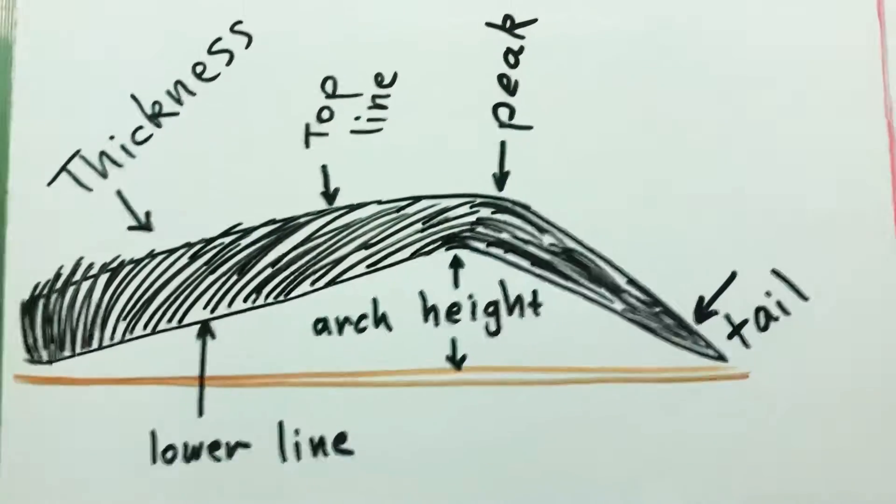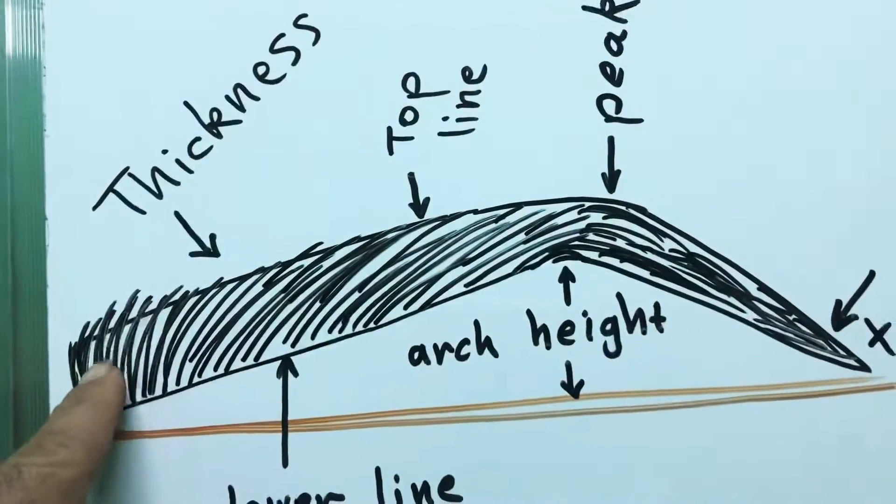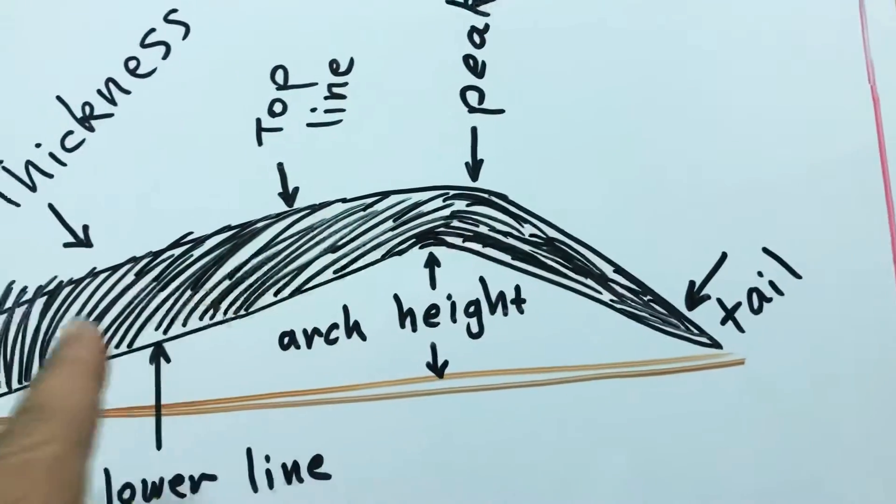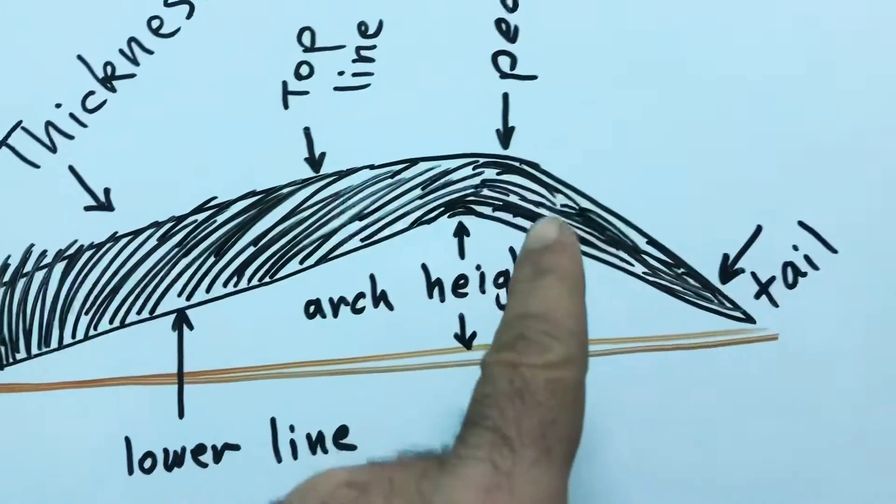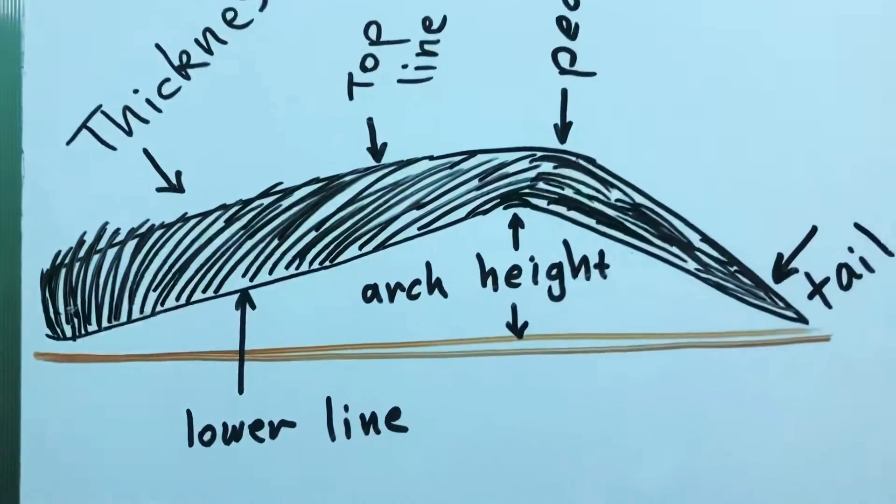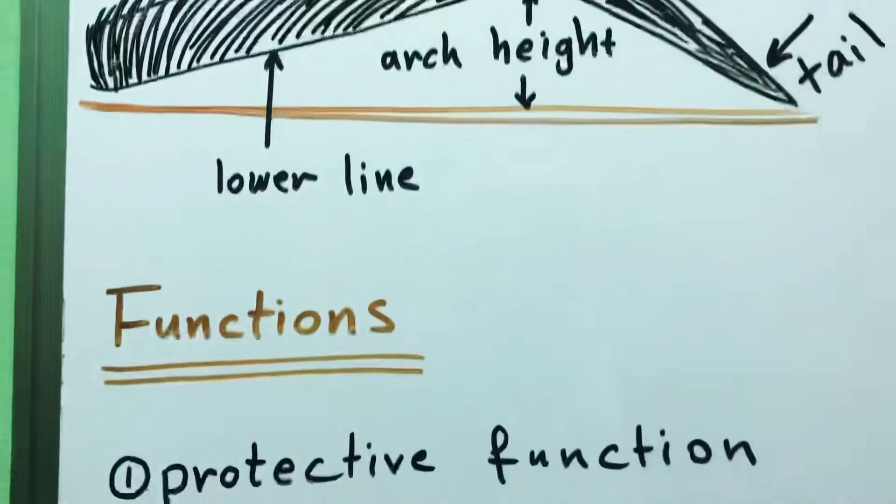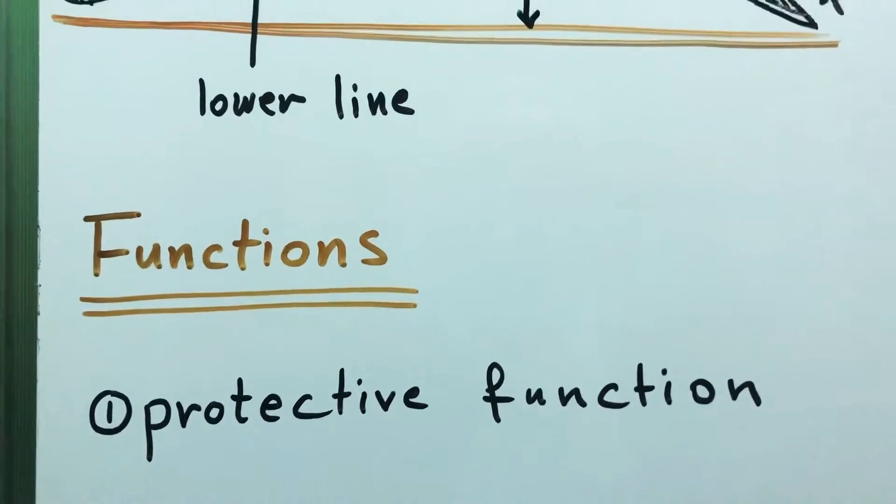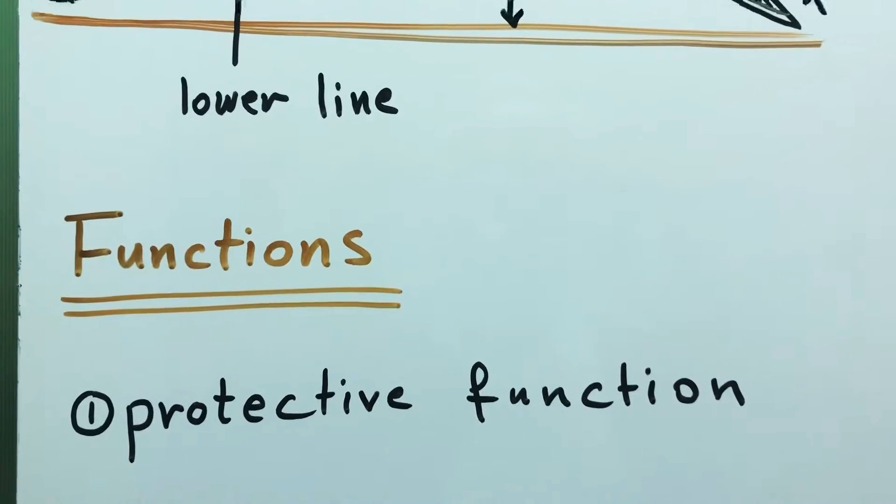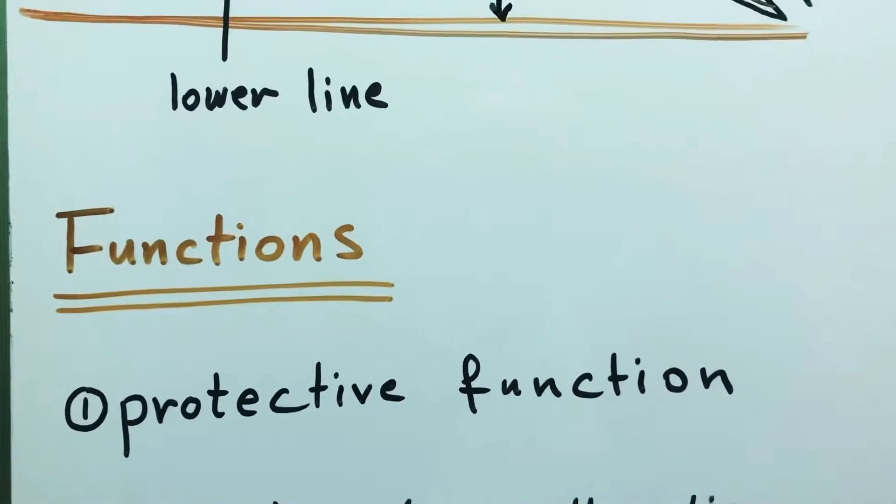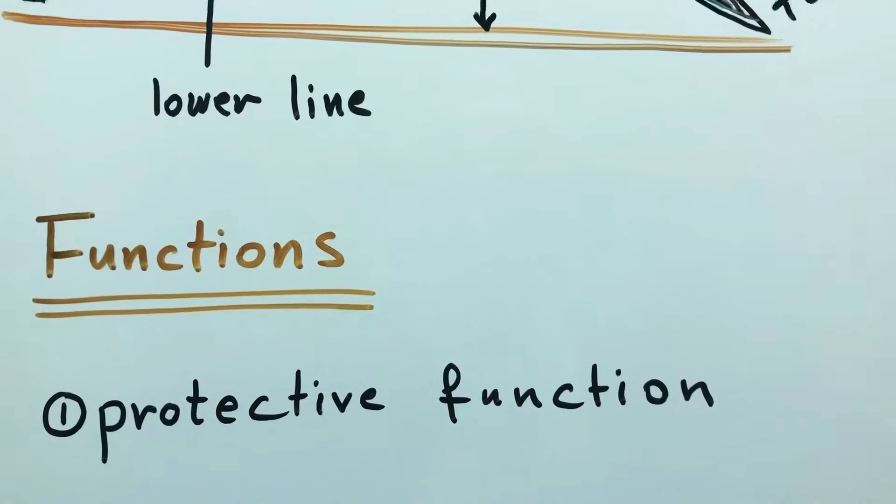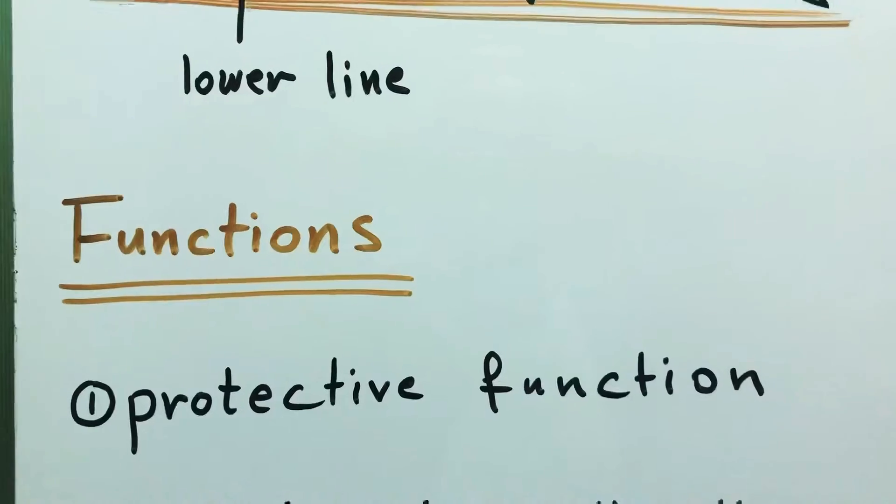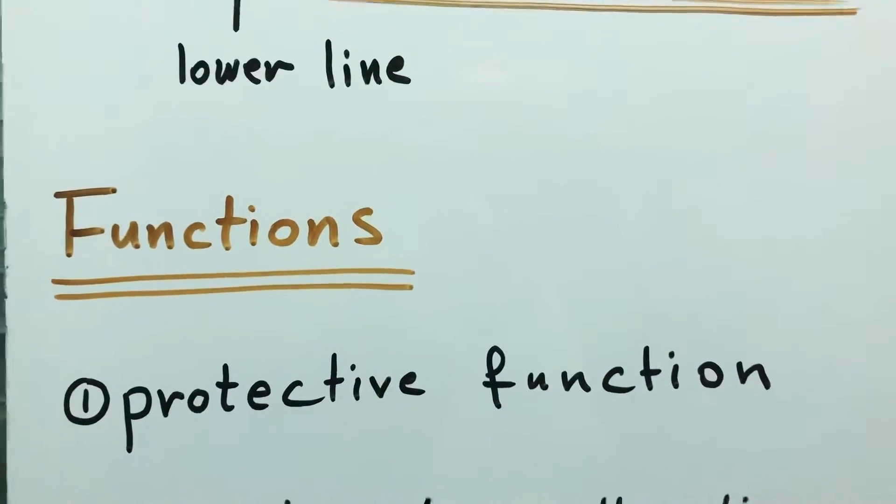It has different parts, the beginning and the tail, the arc and two lines, the top line and the lower line. The eyebrow has different functions, most important of which is its protective function as it forms a physical barrier that prevents flowing of moisture, dust, sweat and rain into the eye.